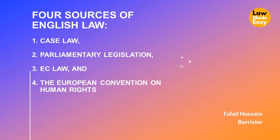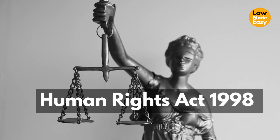The European Convention on Human Rights was brought into UK law under the Human Rights Act 1998. So it won't be wrong to say that the main sources of English law now are case law, parliamentary legislation, and the Human Rights Act 1998 — although it is a parliamentary legislation, its fountain is the European Convention on Human Rights.